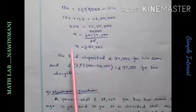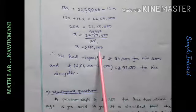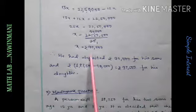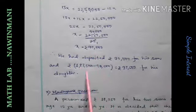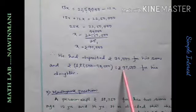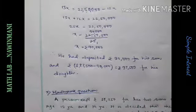So, for son, out of 1,87,500, how much deposited? 90,000. And remaining? Daughter receives remaining. This minus 90. Son gets this much deposited. If we subtract, remaining how much? 97,500 deposited for daughter.